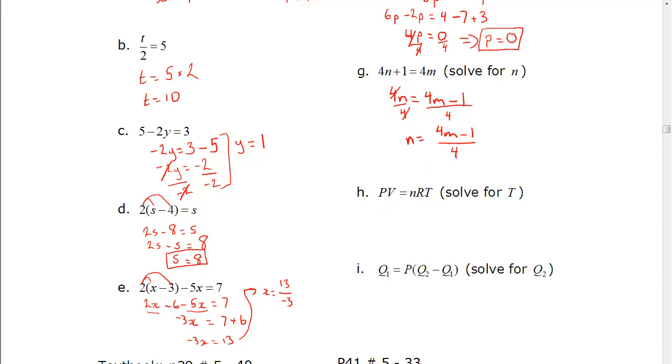H, we can do the same thing. PV equals nRT. We want T. We need to get rid of n and r. n and r are multiplied together with T, so the opposite of multiply, or to get rid of it, we divide. Same thing to both sides. Those are gone, and we get the final answer as T equals PV over nR.